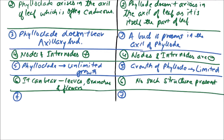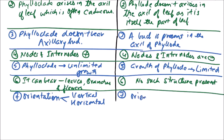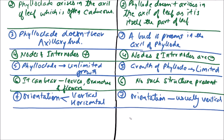The next difference is regarding orientation. The orientation of a phylloclade can be vertical or horizontal, but the orientation of a phyllode is usually vertical.